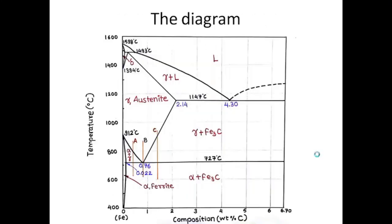Let us look at the diagram now. On the left-hand side we have pure iron; on the right-hand side we have 6.70 weight percentage carbon. We have different zones. This is the alpha zone, which is ferrite having BCC crystal structure. This is the gamma zone, known as austenite, having FCC crystal structure. And this is the delta zone, known as delta ferrite, having BCC crystal structure.